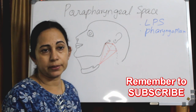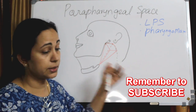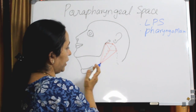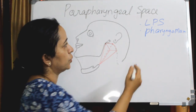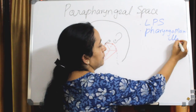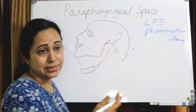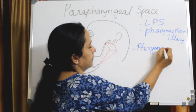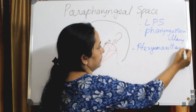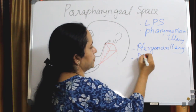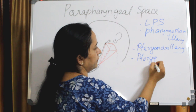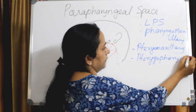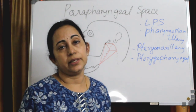From this diagram you can easily remember the synonyms. It can be called the lateral pharyngeal space, or the pharyngomaxillary space — related to the maxilla — or the pterygomaxillary space, or the pterygopharyngeal space. All are the same.